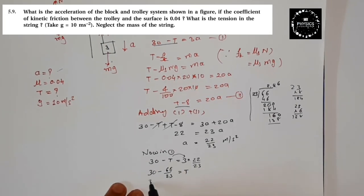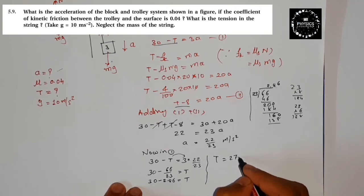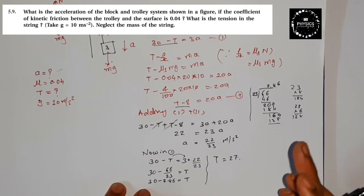16. Ab 16 bhi yaha nahi laga sakte hain. Aur ek aur 0 le lijiye. Ab yaha 160. 23 seven times, 23 six times try karte hain. To 23 six times 138. To yaha pe six. 138 aur yeh chalta rahega. Hum ise abhi yeh round off kar dete hain. Yahi value hum log laga lete hain. To hamare paas kya aayega? 30 minus 2.86 is equal to T.